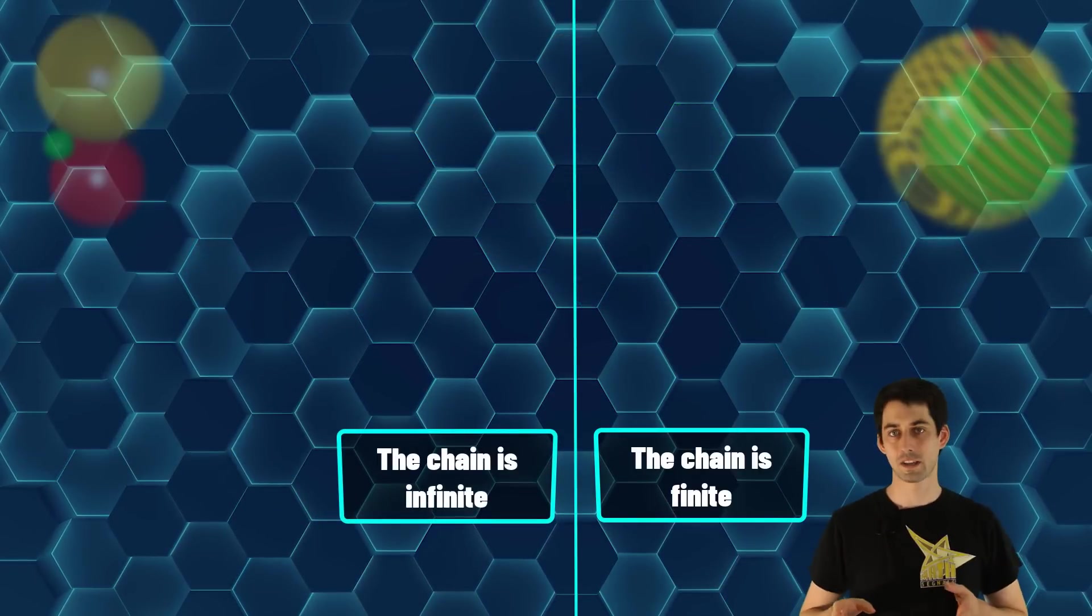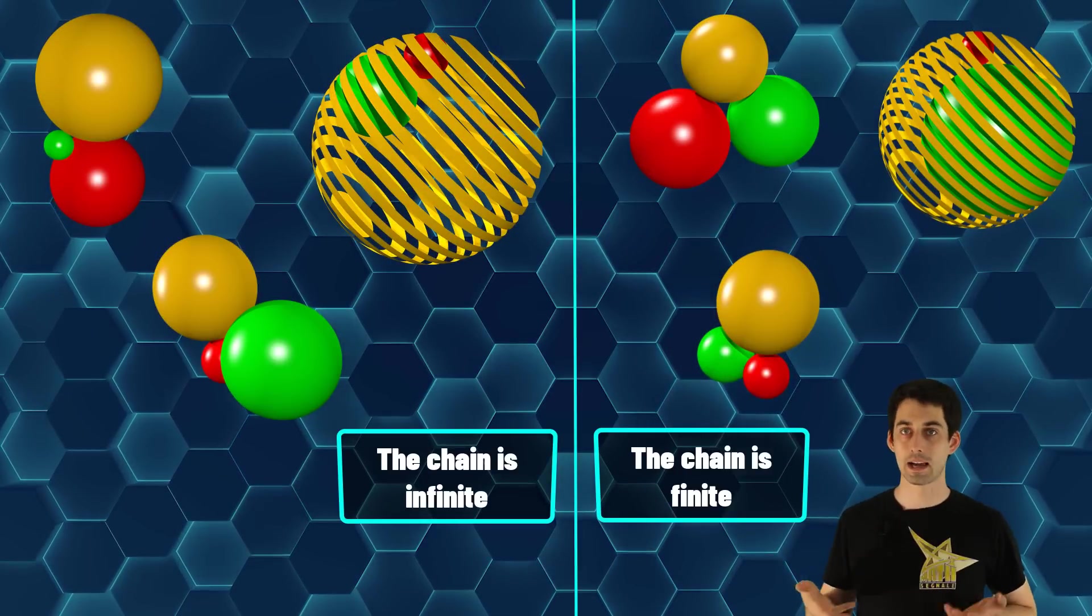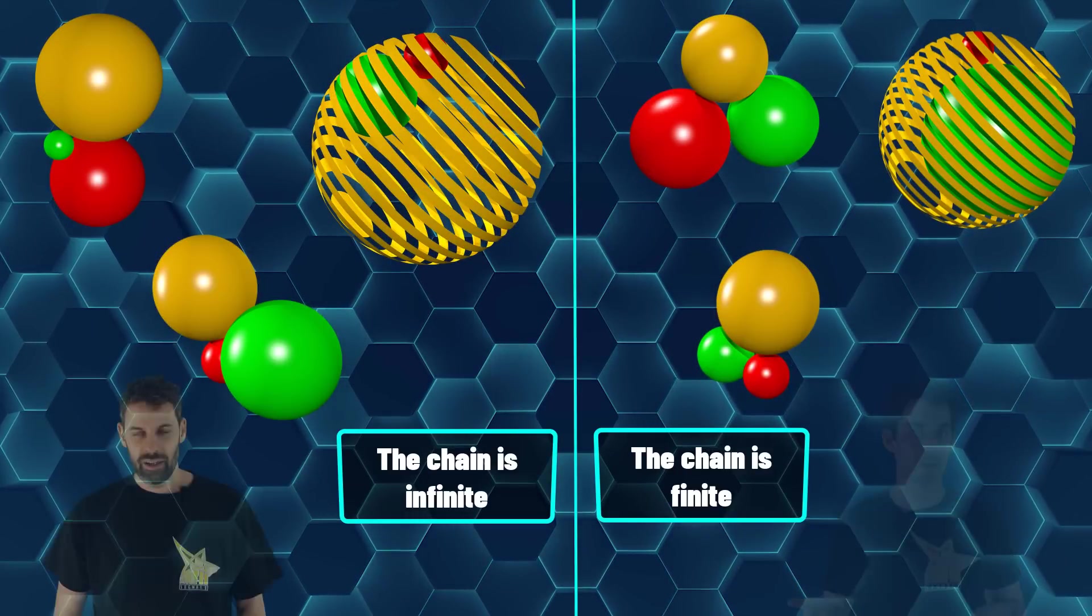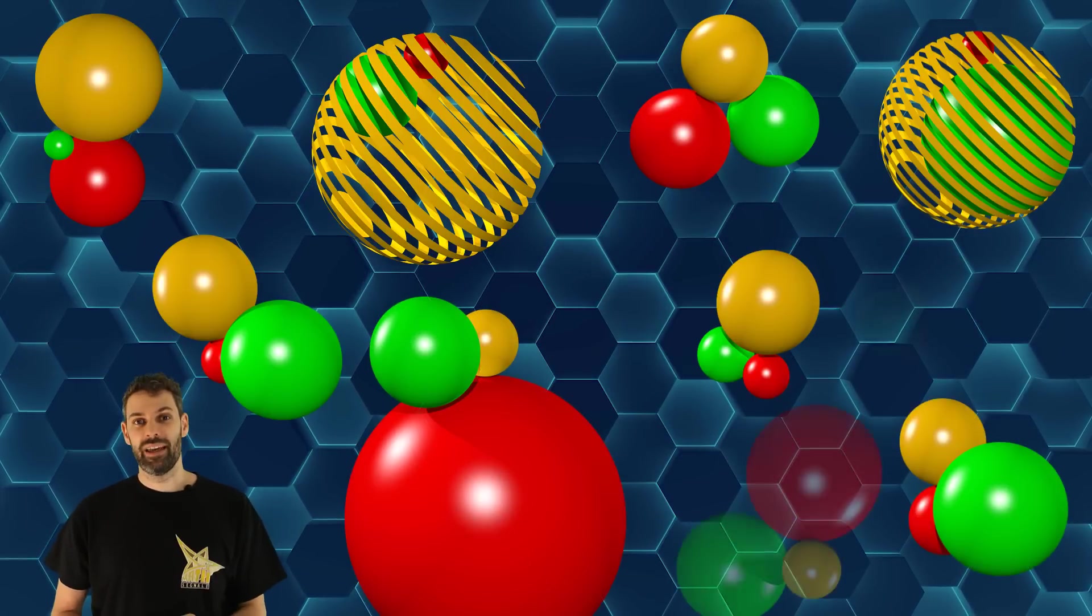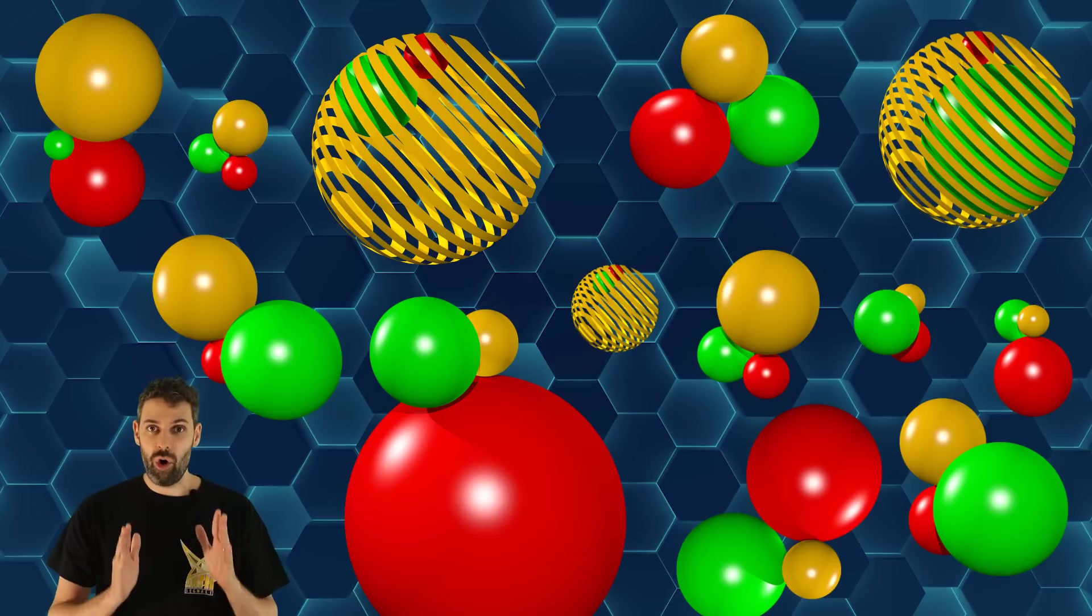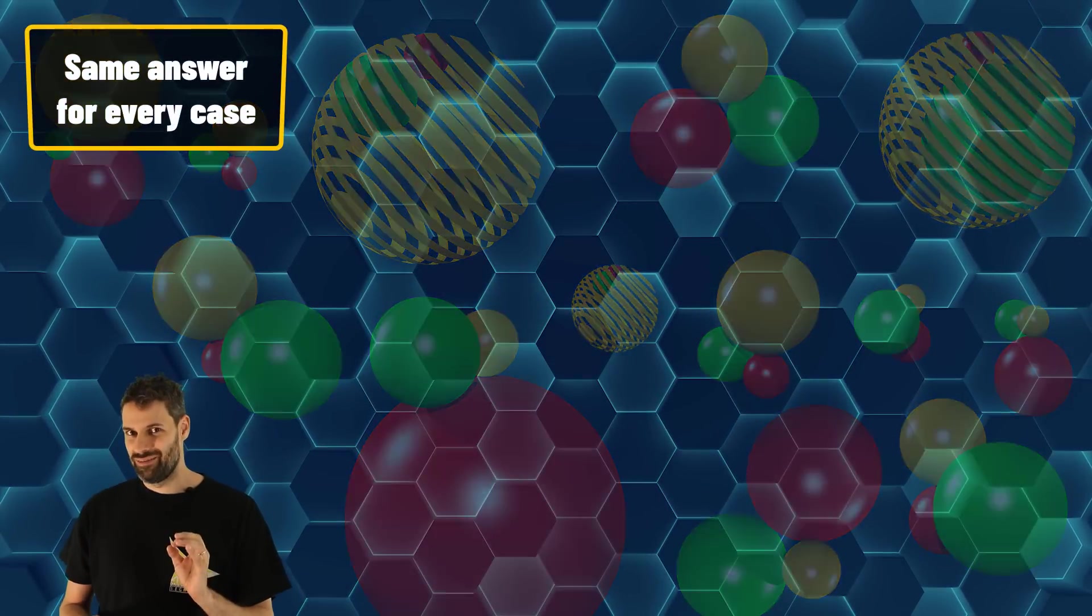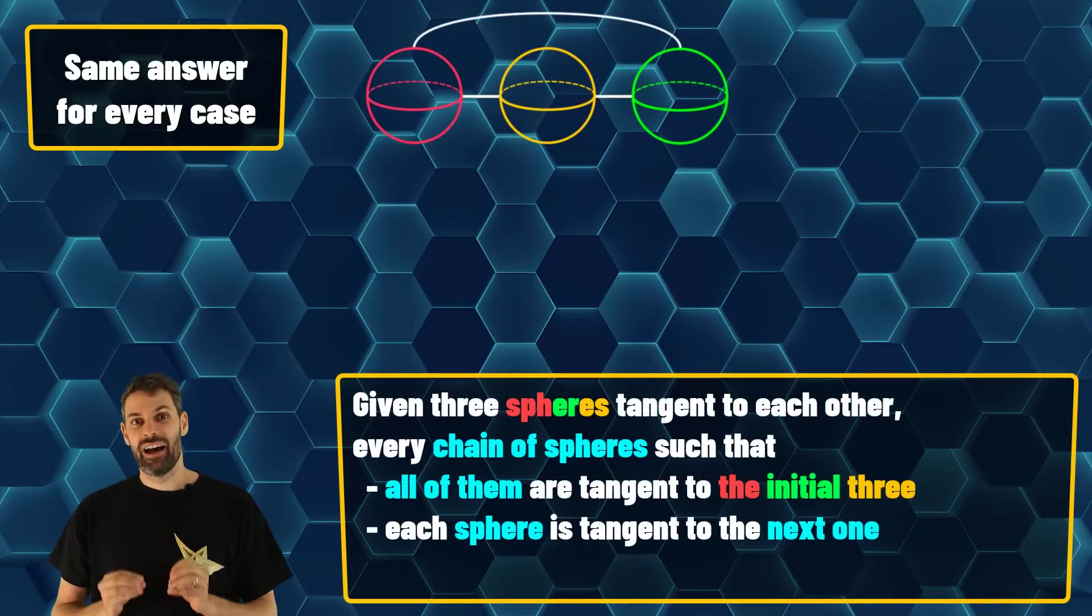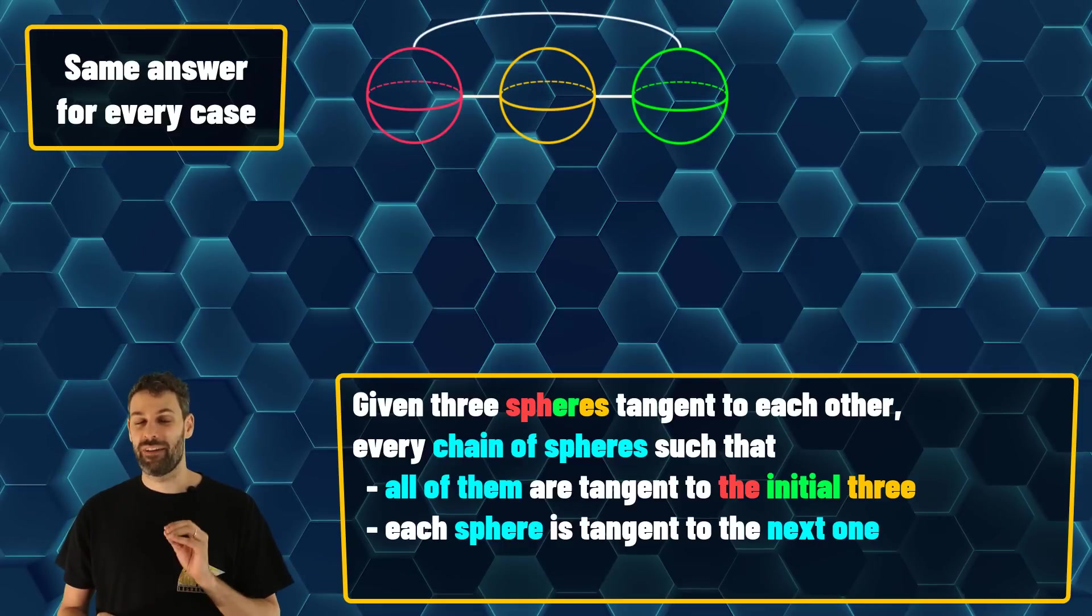Right, and I assume that depending on the choices of the initial spheres, you can realize all these possibilities. In theory, yes, but the beauty of the problem is that for all the possible initial conditions, the answer is always the same. It does not matter how you put the three initial spheres. The chain is always finite.